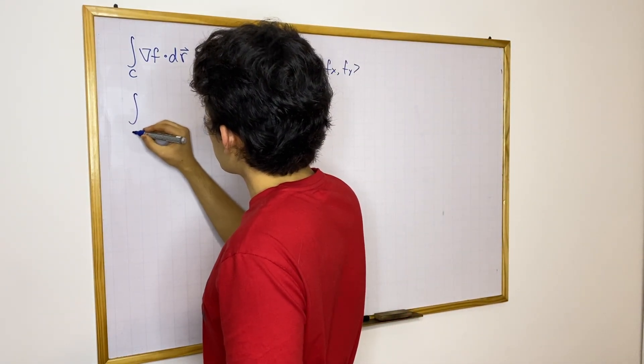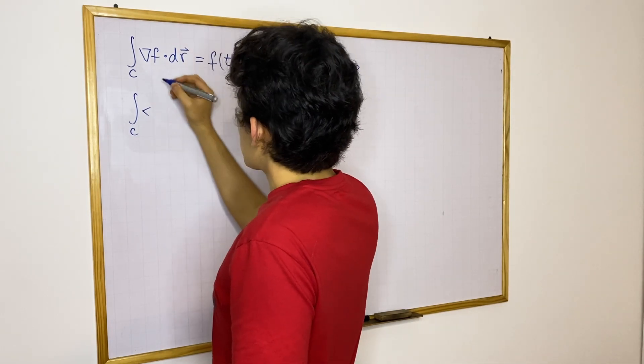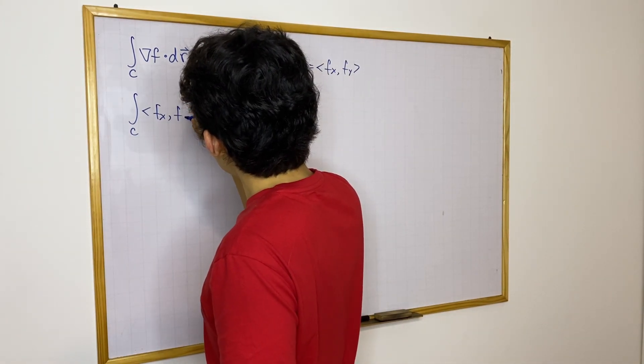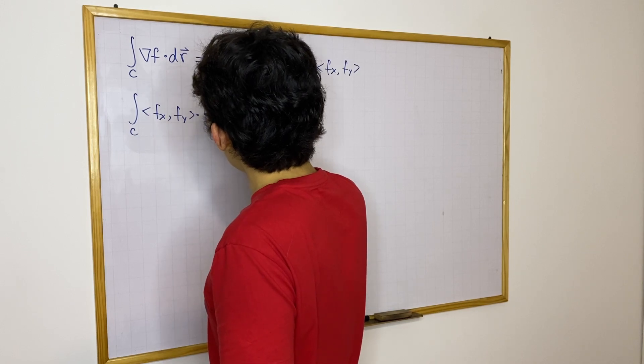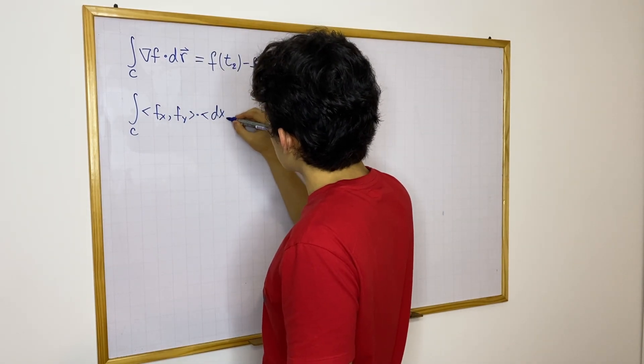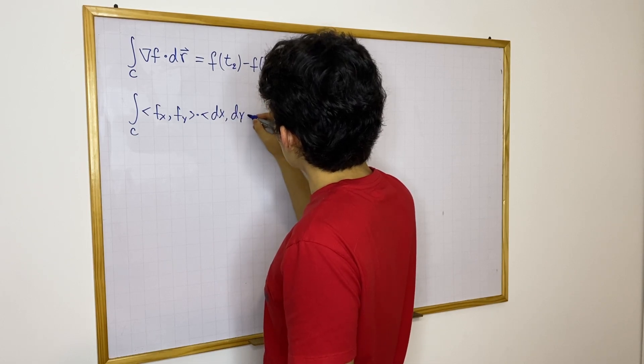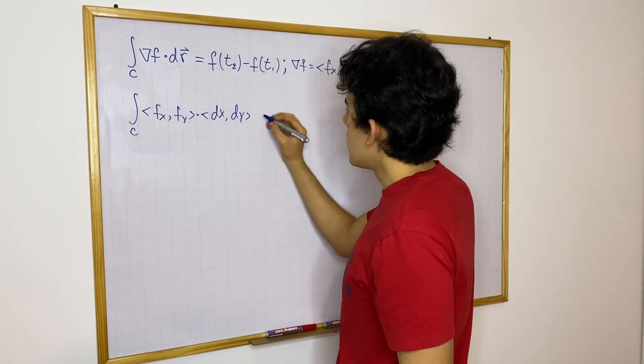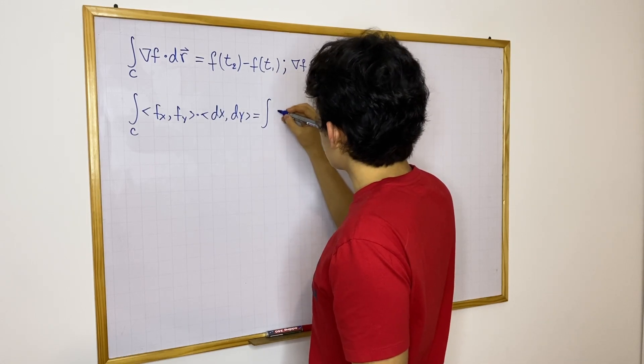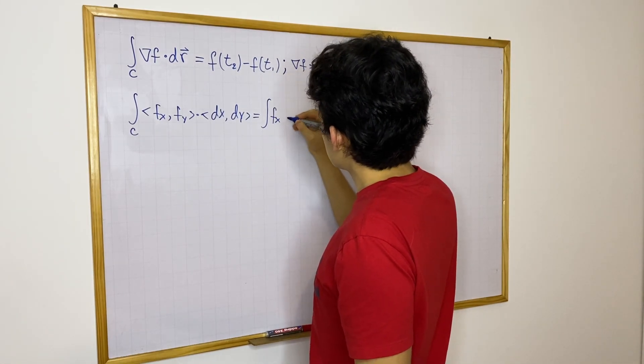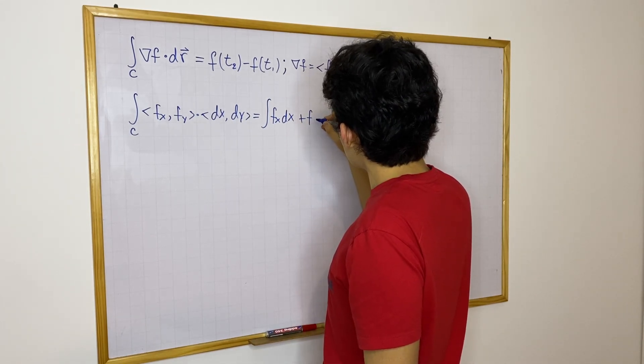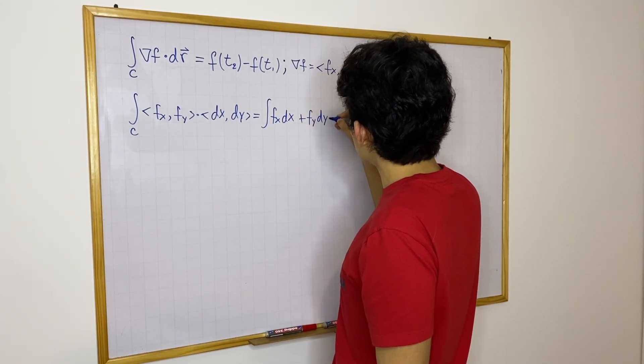Now, I'm just going to rewrite what we have. So gradient f is going to be f sub x, f sub y, dot dr. Well, we know that's the displacement vector, so let's say this is dx dy. This is what we have now. Now, we could continue to simplify this like this, f_x dx plus f_y dy.